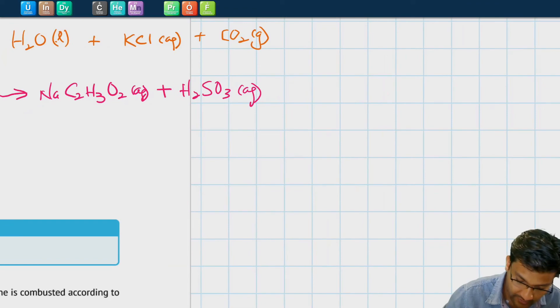And the H+ reacts with the hyposulfite to form H2SO3 aqueous. But again, from our table, H2SO3 will break down into instead H2O liquid and SO2 gas.